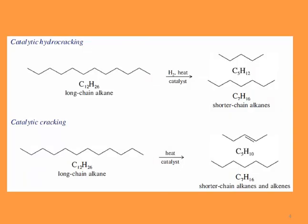Let's look at some examples. At the top we have catalytic hydrocracking, sometimes called cat hydrocracking. We start with C12H26, a long-chain alkane, and in the presence of hydrogen, heat, and a catalyst, we decompose it into two smaller alkanes: C5H12 and C7H16.